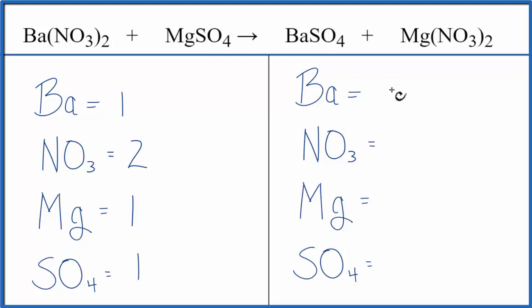On the product side, BA we have one. And then nitrates, we have one times two, so two of those. One magnesium and one sulfate.